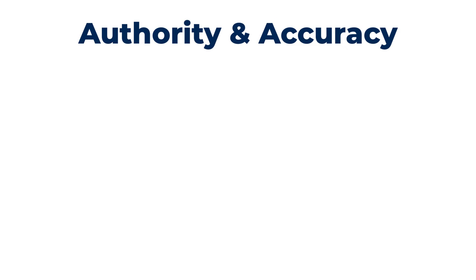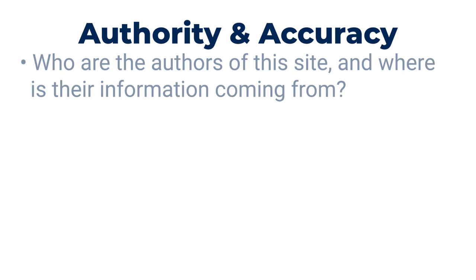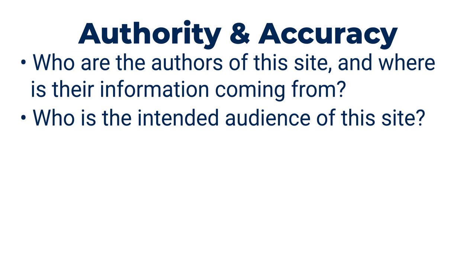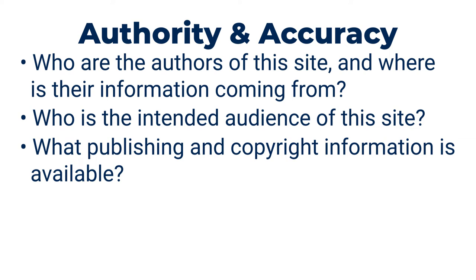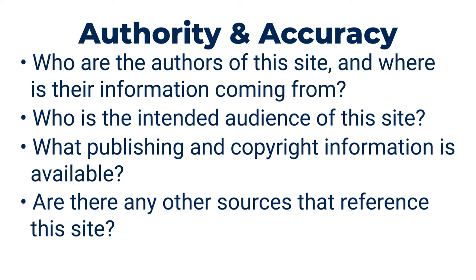To check for authority and accuracy, read the About section. Determine the qualifications of the author or authors of this information. Ask yourself: where is the information coming from? Who is the intended audience for this site? Is there any publishing or copyright information that you can find? Are there any other sources that reference this site?